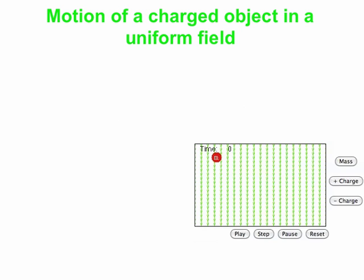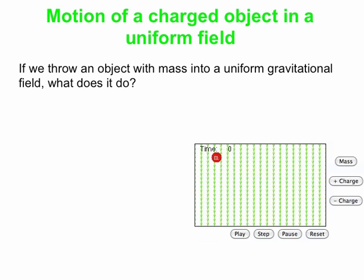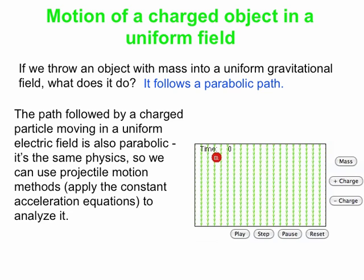Let's consider some charged objects in a uniform field. In the background there are equally spaced green arrows all pointing down — so there's a uniform field here. Let's go back to what we've learned before. We take an object with mass, like a baseball, and throw it into a uniform gravitational field. Near the surface of the Earth is a pretty good approximation of a uniform field. The baseball is going to follow a parabolic trajectory. If we do the analogous thing for a charged particle in a uniform electric field, it's all the same physics, so we get the same kind of motion — a parabolic path.